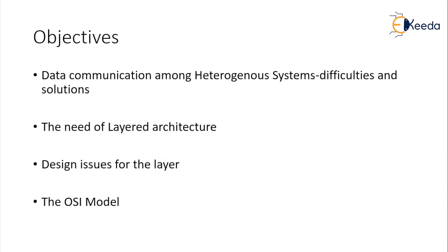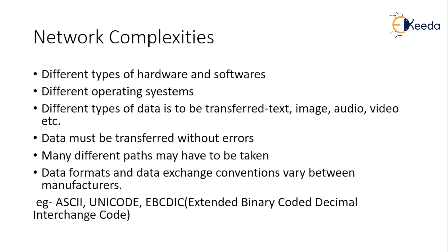These are the objectives which we will be covering in this presentation. First, we will see how data communication amongst heterogeneous systems was difficult, and how solutions came into existence. The OSI model became one of the solutions for communication amongst heterogeneous systems. We will also look at why there was a need for layered architecture, and what issues were faced by the designers of the OSI model layers, and how the OSI model was developed with its seven layers.